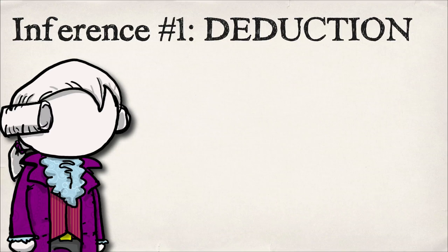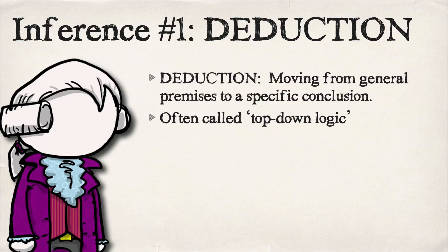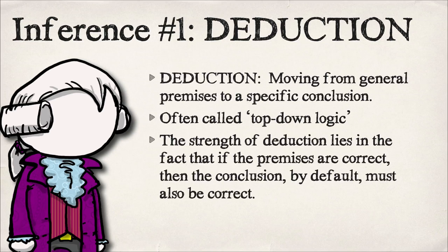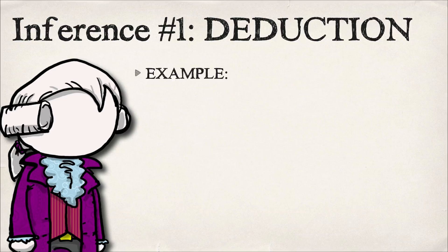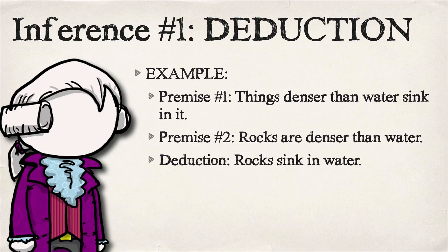Those are both explanations. There are three types of inferences. The first is called deduction — the idea that we take some general premises and then move to a specific conclusion. This is often called top-down logic. The strength of deduction is that if your premises are correct, then by default your conclusion has to be correct. For instance, if things denser than water sink and rocks are denser than water, then the deduction is that rocks sink in water.